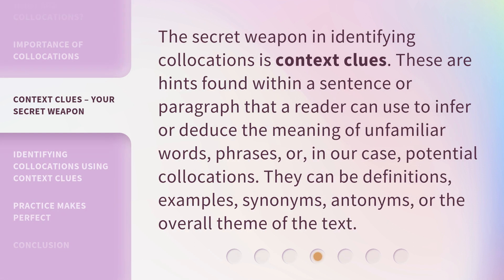The secret weapon in identifying collocations is context clues. These are hints found within a sentence or paragraph that a reader can use to infer or deduce the meaning of unfamiliar words, phrases, or potential collocations. They can be definitions, examples, synonyms, antonyms, or the overall theme of the text.